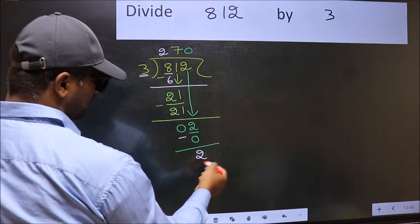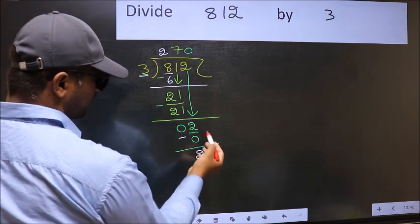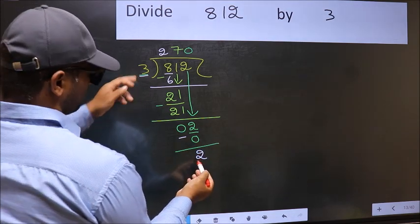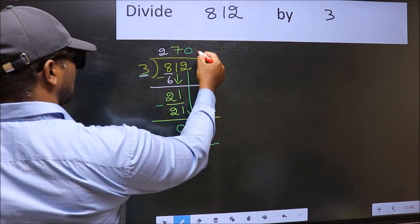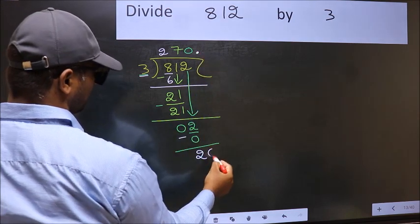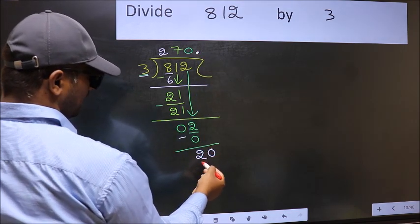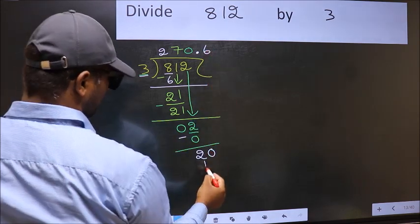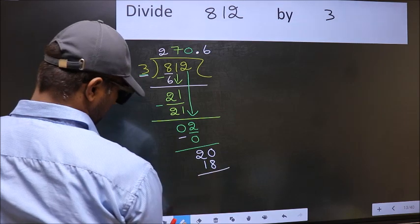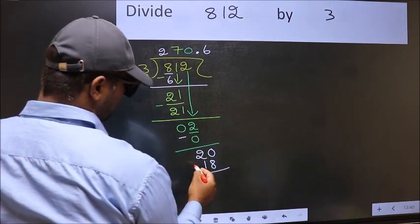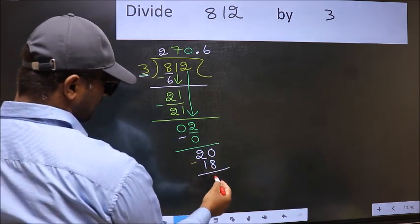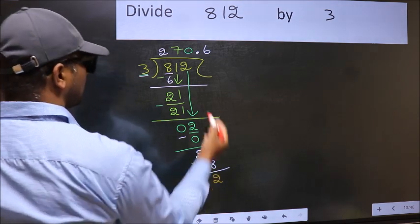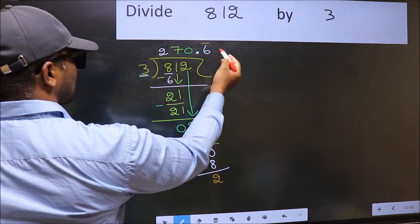Over here, we did not bring any number down. And 2 is smaller than 3. So now you should subtract 2. So 20. A number close to 20 in 3 table is 3 times 6, 18. Now you should subtract 20 minus 18, 2. We got 2 again. That means we get bar on this number.